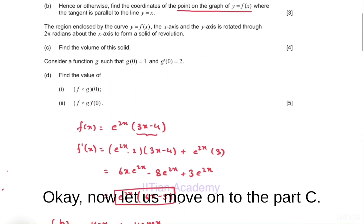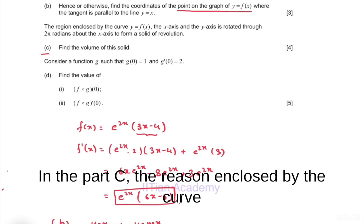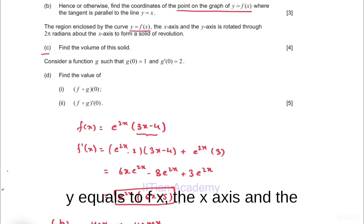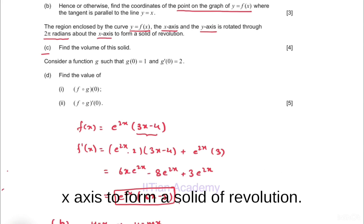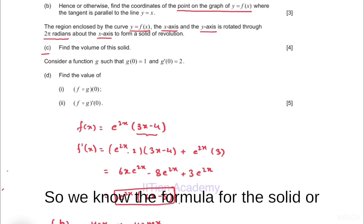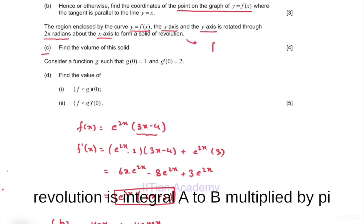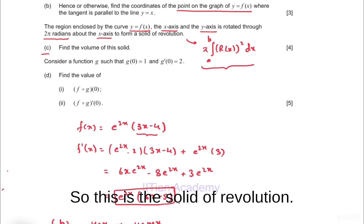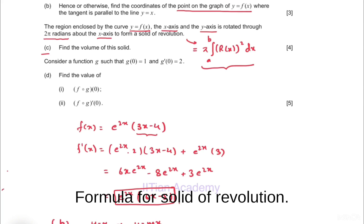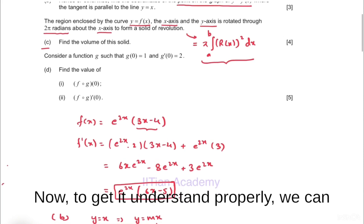Now let us move on to Part (c). The region enclosed by the curve y = f(x), the x-axis, and the y-axis is rotated through 2π radians about the x-axis to form a solid of revolution. The formula for the volume of solid of revolution is: integral from a to b of π·[f(x)]² dx.